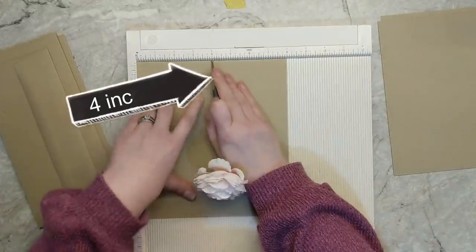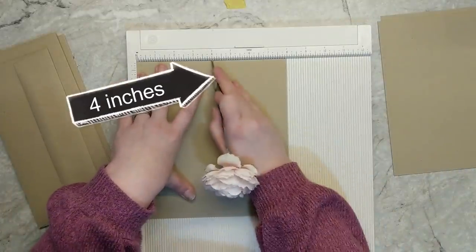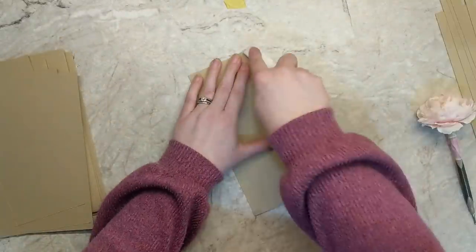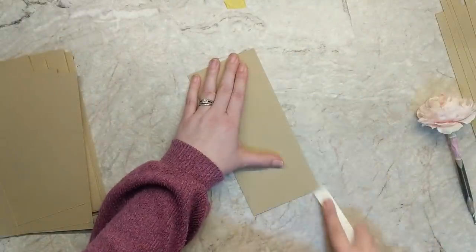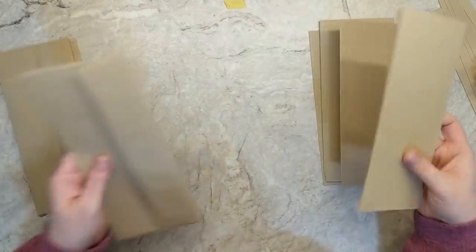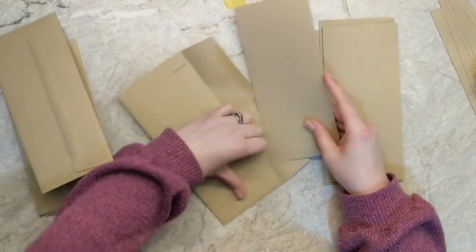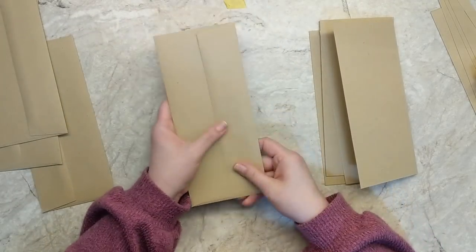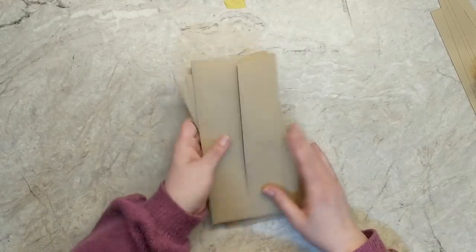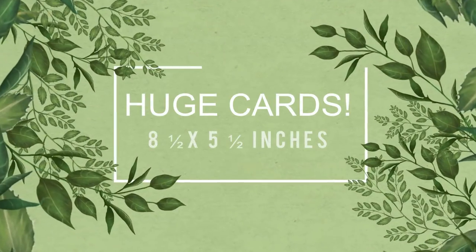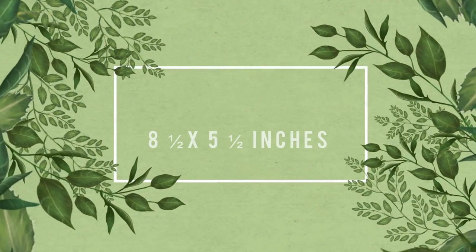I'm going to pop this card base into my scoreboard and across the 8 inch side, I'm going to score at 4 inches. Then I'll crease my fold with my Teflon bone folder. This fits perfectly inside of these envelopes. My finished card base measures 9 by 4. I'm going to slip these cards inside of the envelope and I'll store them in my little crafty bucket with the rest of my cards and envelopes that I've cut up already.